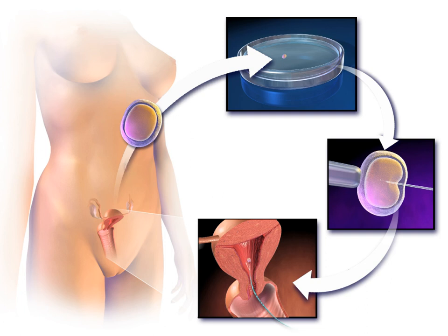Embryo transfer is the step whereby one or several embryos are placed into the uterus of the female with the intent to establish a pregnancy. A less commonly used technique is assisted zona hatching, performed shortly before the embryo is transferred to the uterus — a small opening is made in the outer layer surrounding the egg to help the embryo hatch out and aid in the implantation process.